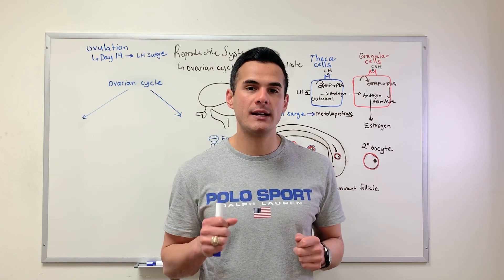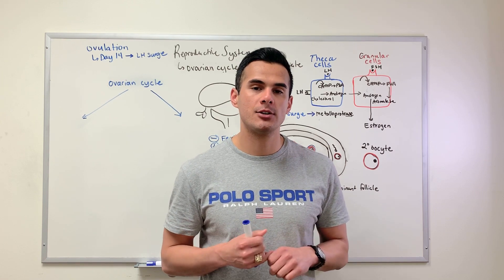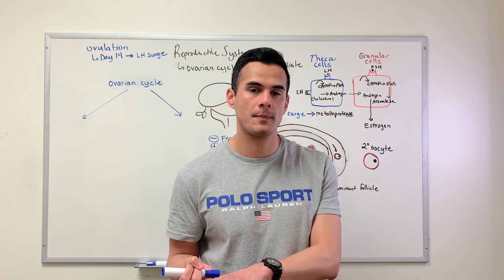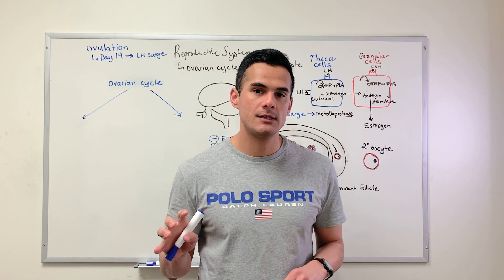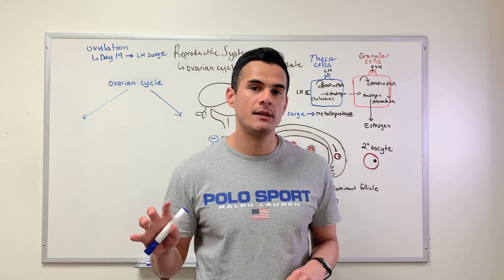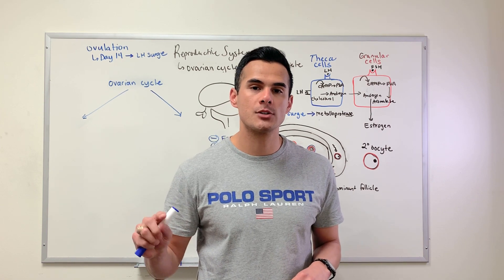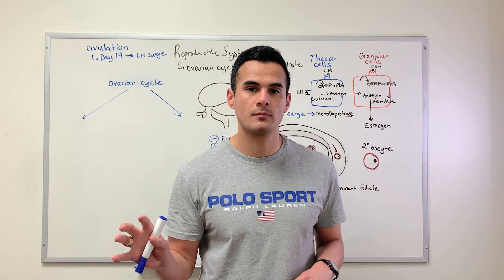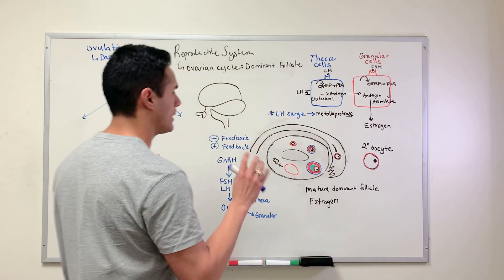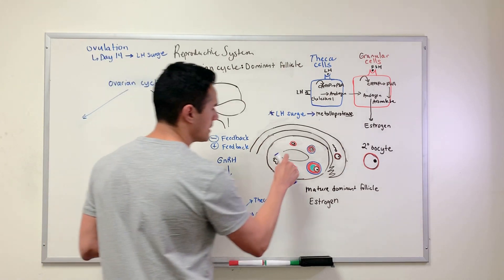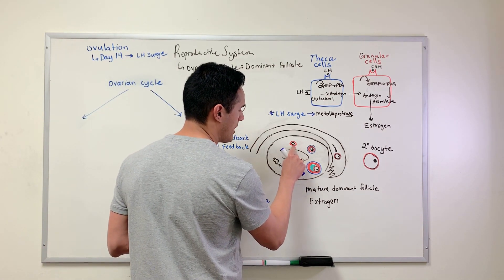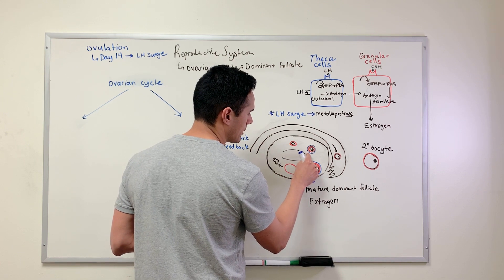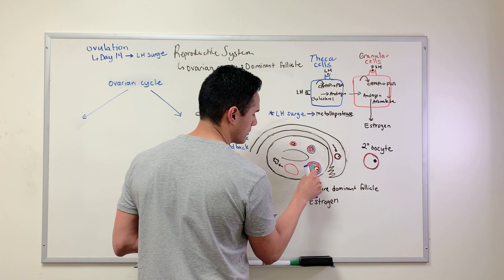The ovarian cycle is divided into two main phases: the follicular phase and the luteal phase. The follicular phase is the development of our follicle, which is what nourishes our oocyte. On the board here, this is a primary follicle, this is a secondary follicle, and this here is my mature follicle.